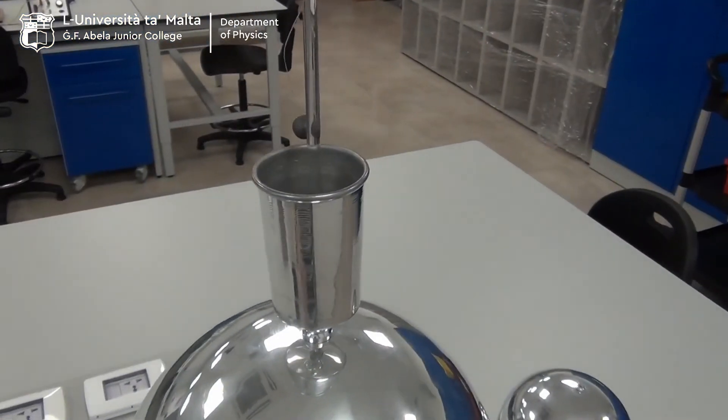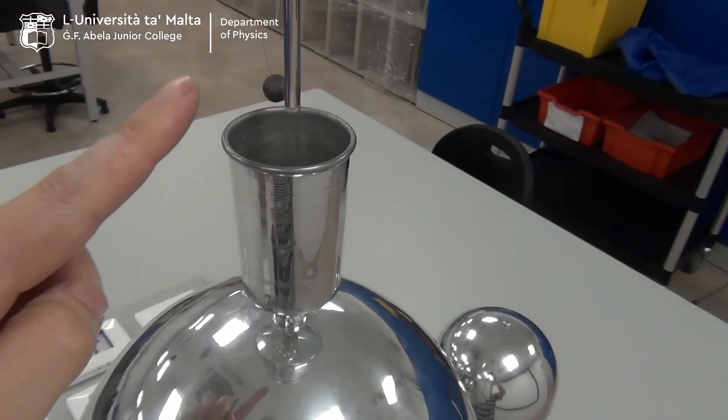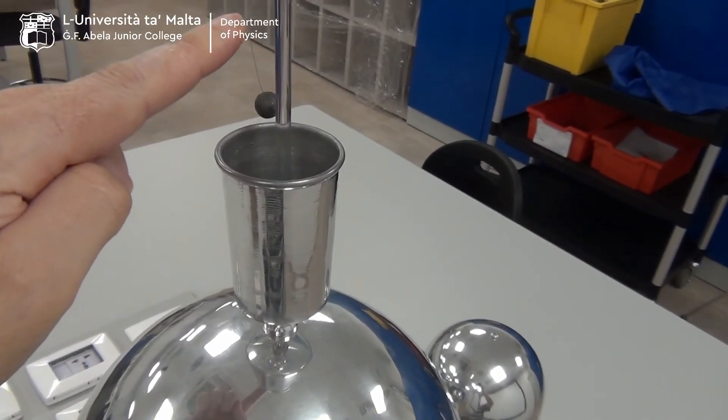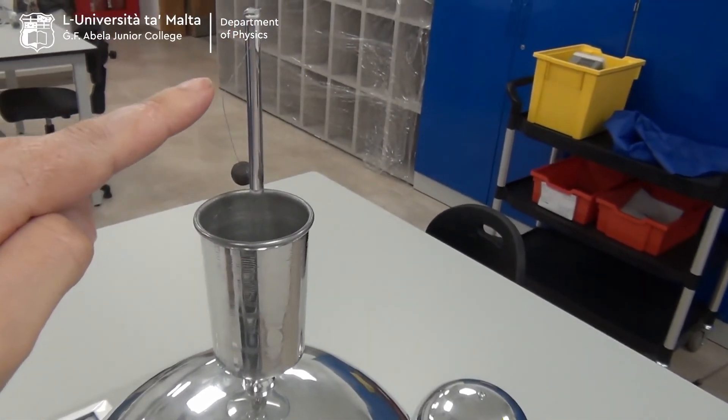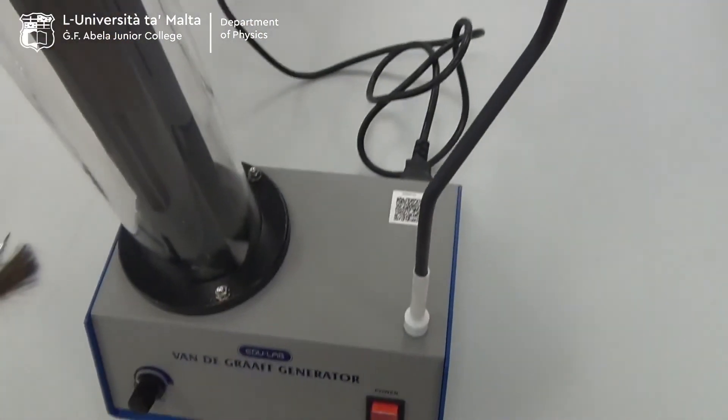To demonstrate the principles of repulsion, we have another sphere up here, a lead sphere suspended by a nylon thread. And when we switch on, we are going to switch on.